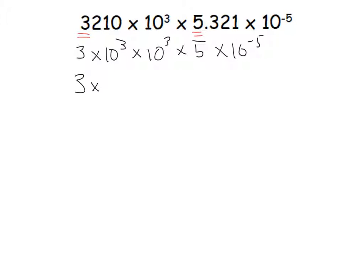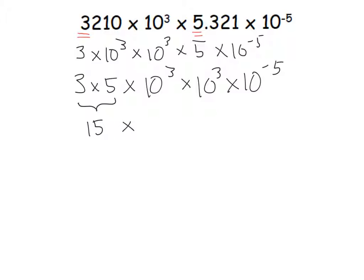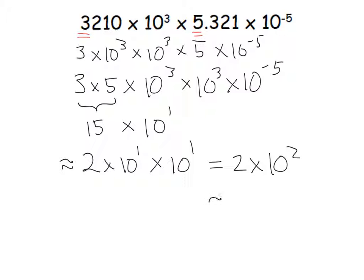When we rearrange, we get 3 times 5 times 10 to the third times 10 to the third times 10 to the negative fifth. Putting 3 and 5 together gives us 15. Combining 10 to the third, 10 to the third, and 10 to the negative fifth gives 10 to the sixth times 10 to the negative 5, so the 5s cancel and we get 10 to the first. Since 15 is not proper scientific notation, we round it: 15 is approximately 2 times 10 to the first, times 10 to the first, giving approximately 2 times 10 squared.